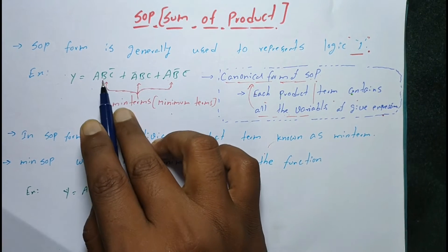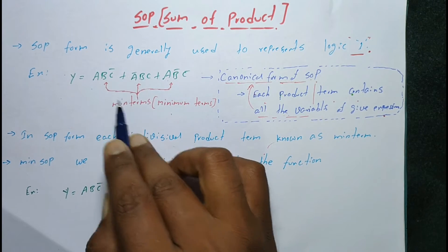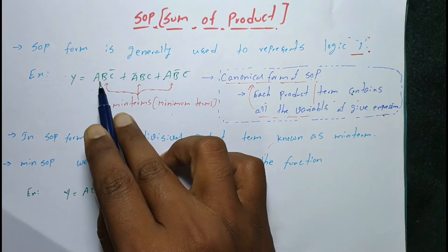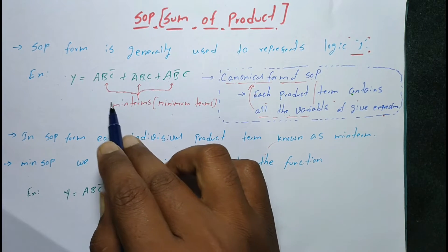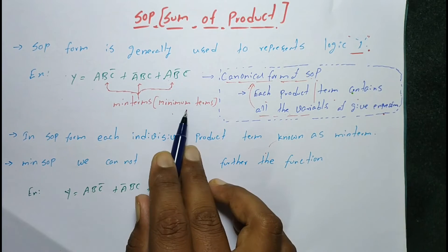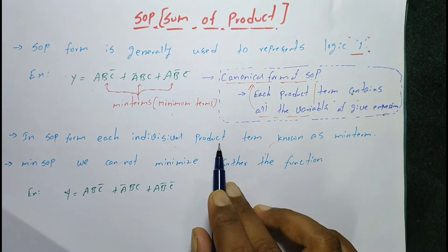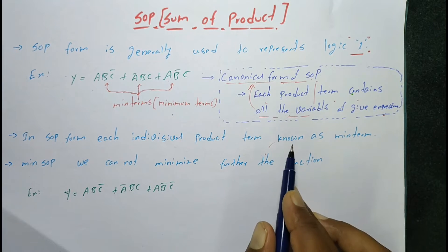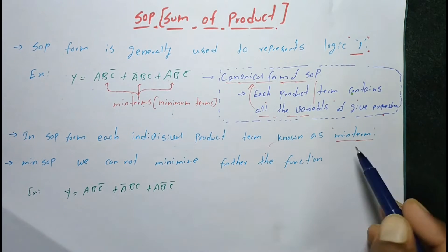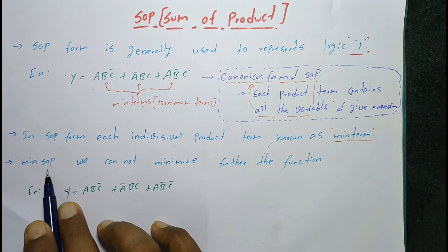In SOP form, each individual product term is called a min term, or minimum term.